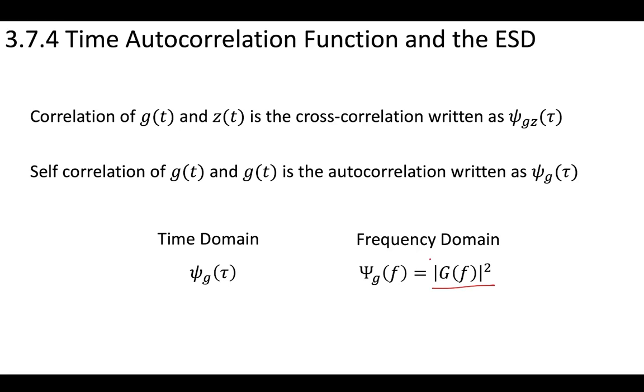And we've seen this before, right? This ψ_g is our energy spectral density. And so what we learn from this is that the Fourier transform of the autocorrelation of a signal is the energy spectral density of that signal.